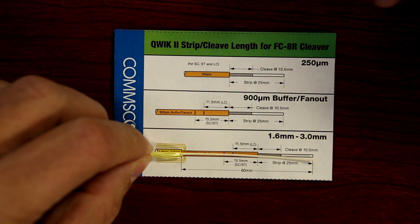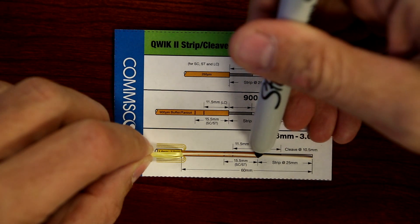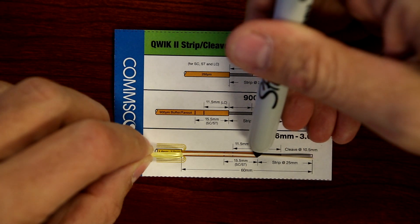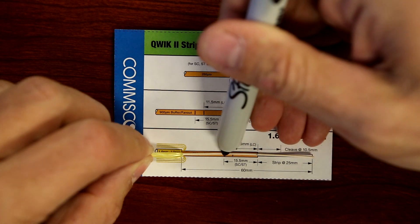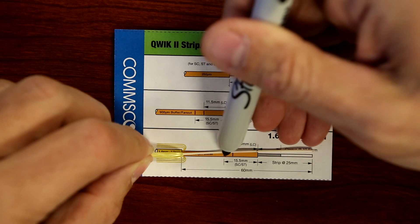Using the strip length template, mark the fiber at two locations: 25mm for the first mark and secondly the connector mark of 15.5mm for an SC-ST connector or 11.5mm for an LC connector.